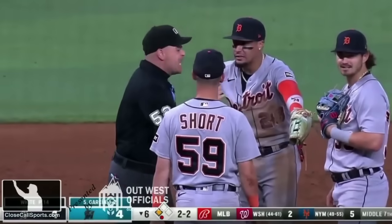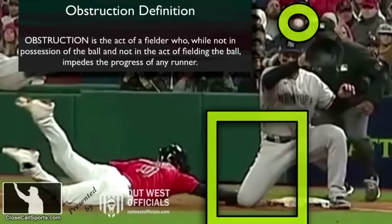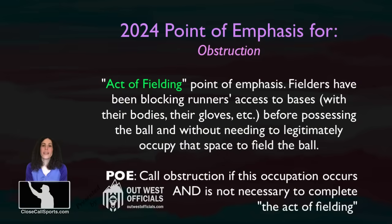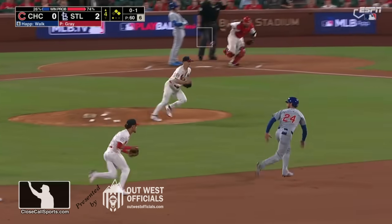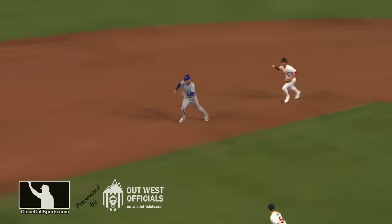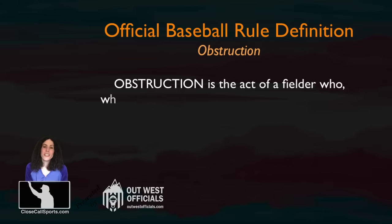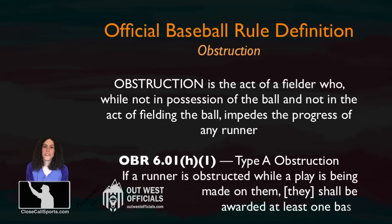So what MLB says is: umpires, you need to pay attention. If the fielder is not legitimately occupying that space to field a throw, then it is obstruction, even if they would otherwise be considered in-the-act-of-fielding. In-the-act-of-fielding only goes so far as occupying that space if necessary to field the throw. And the problem in rundowns specifically is that the fielder who is not in possession of the ball — who's setting up to eventually receive it — very often will get in the runner's way. That is obstruction, because it impedes the progress of that runner before the fielder is in the legitimate act of fielding.